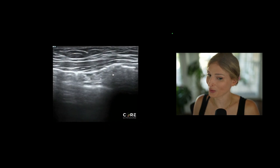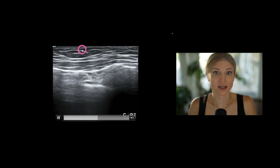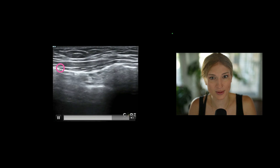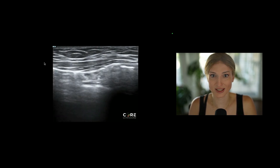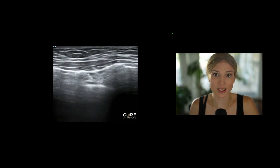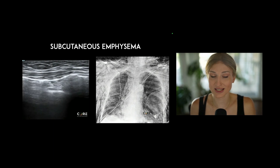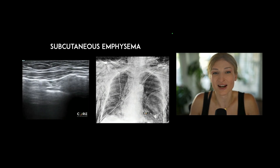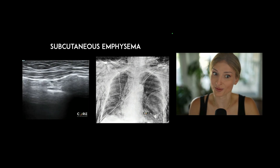There are always limitations with any examination, and this is a big one for evaluating pneumothorax. Here we see subcutaneous tissue, some muscle, and probably rib, but we're seeing what looks like a pleural line above the rib and maybe a little pleural line below. When we see air above that rib, that is highly suspicious for subcutaneous emphysema. If you see that, the only thing you can say is that the patient has subcutaneous emphysema — you can't comment on the pleura because the subcutaneous tissue is blocking the sound wave from reaching it.